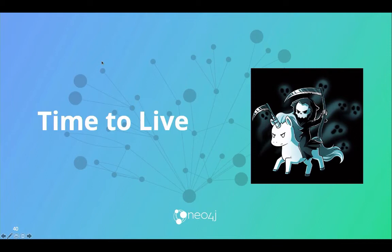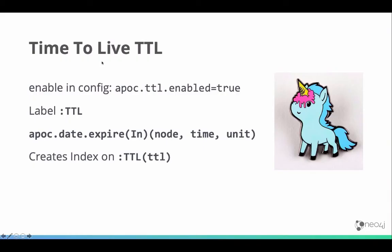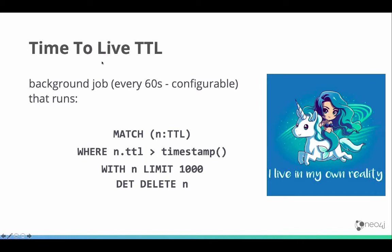The next one is time to live. Time to live allows you to have nodes and relationships that are only temporarily available. If you have data that only lives for a few minutes, hours, or days, you can mark those nodes with a TTL label and tell APOC when to expire the node. It will use an index on that TTL property to regularly run a background process to expire and remove those nodes — using the index to look up nodes where the time has expired and batch-deleting them from the database.